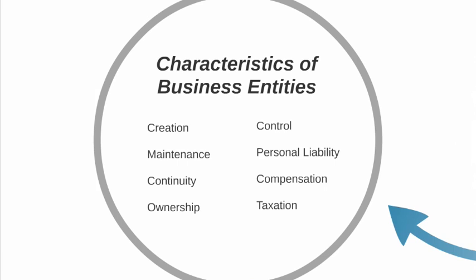Then we talk about ownership — who owns the business entity, what is their role, and how ownership is separated or divided. We also talk about control, which primarily focuses on the management of the business entity, which in many cases is separate from the ownership of the business entity, examining management's role and function.